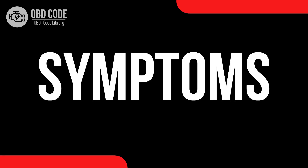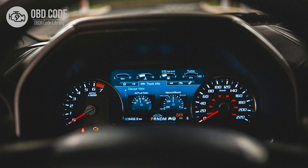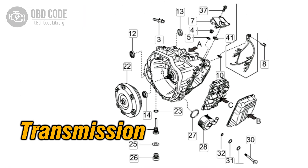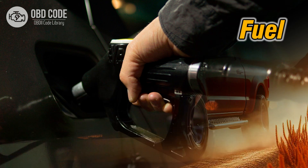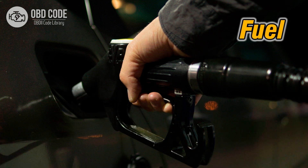Code symptoms P0768: 1. Check engine light illuminated on the dashboard. 2. Transmission shifting issues, such as harsh or delayed shifting, or failure to shift at all. 3. Vehicle may go into limp mode to prevent further damage. 4. Decreased fuel efficiency due to improper transmission shifting.